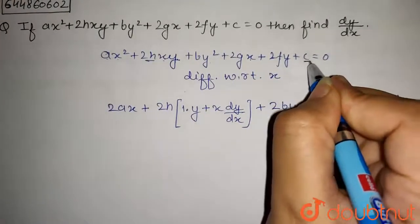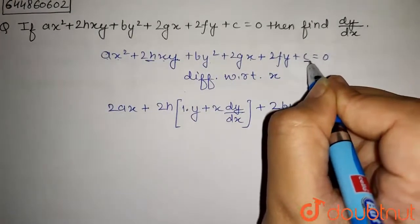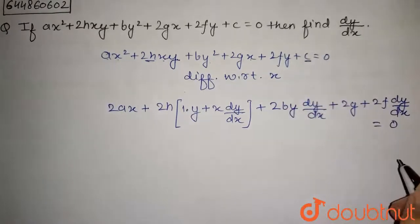Now, this c is constant so differentiation of this c will be 0. So this will be equal to 0.